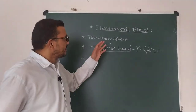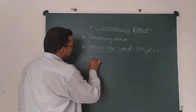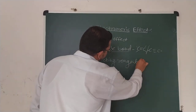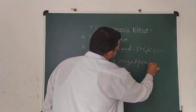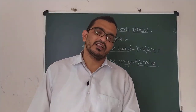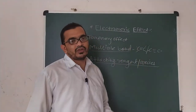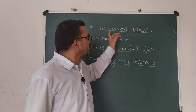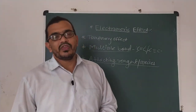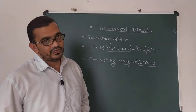Another very important point: there must be an attacking species or attacking reagent required for this particular type of effect. The attacking species is required for the delocalization of electrons. The attacking reagent attacks on the multiple bonded system, and only then is this particular electromeric effect observed. The presence of the attacking species is essential.